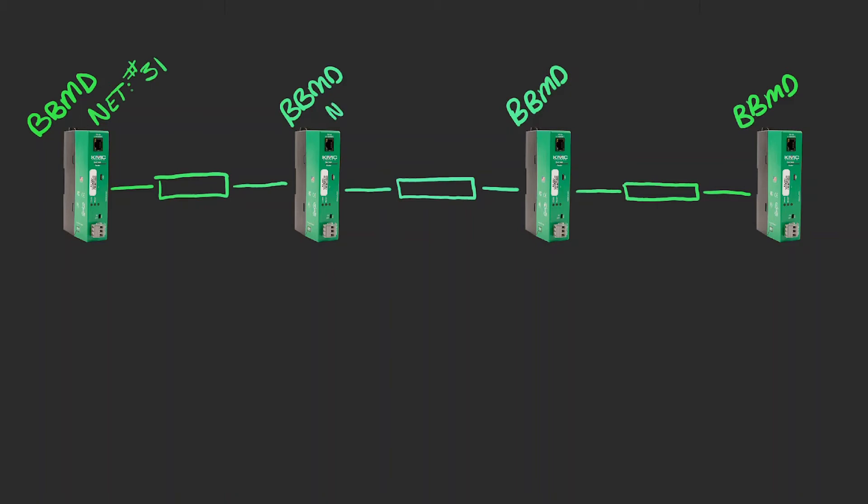But since it is a BACnet network, it is required to have its own unique BACnet network number. All BBMDs on this same network need to be configured with this same unique network number, or they'll get confused trying to route messages.